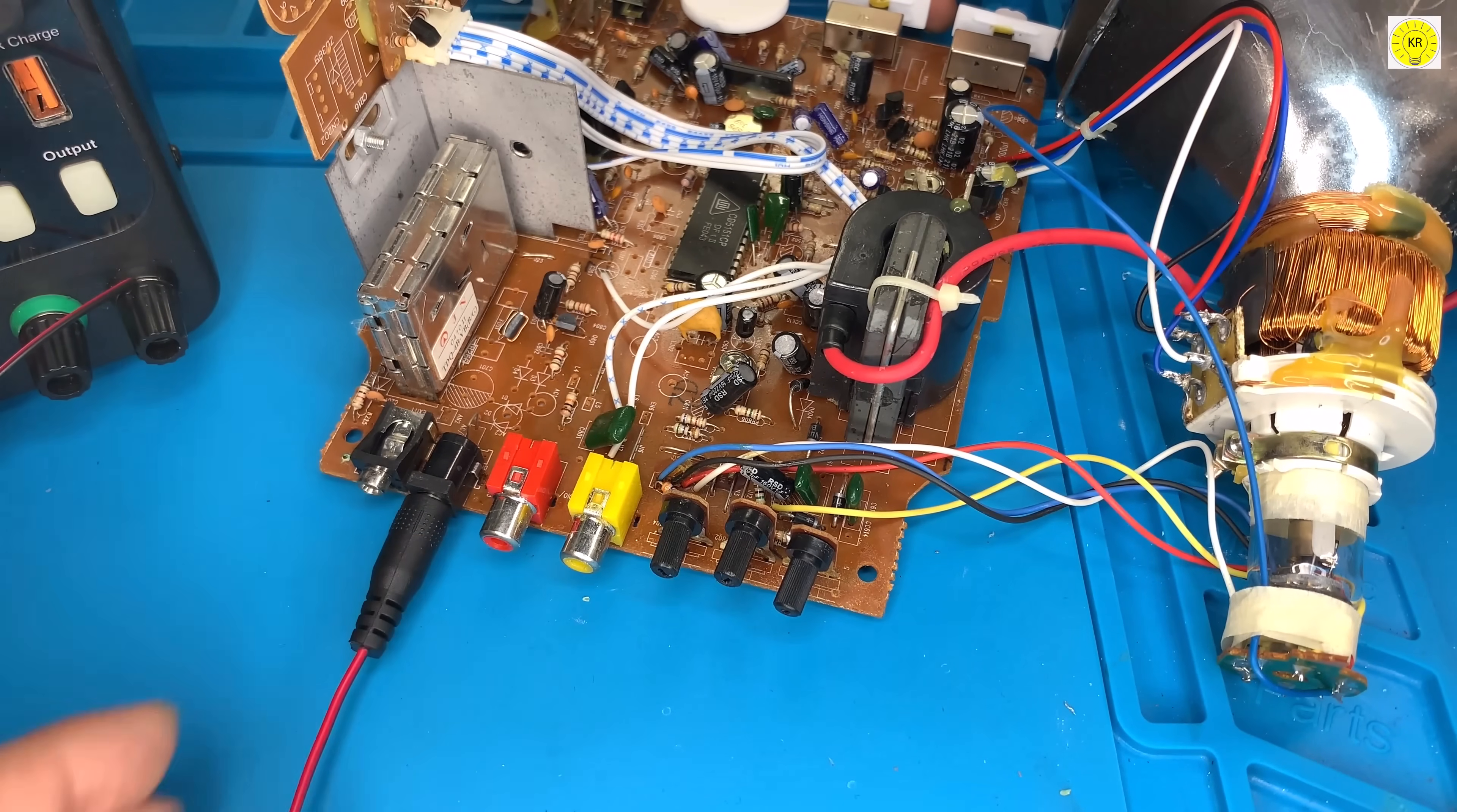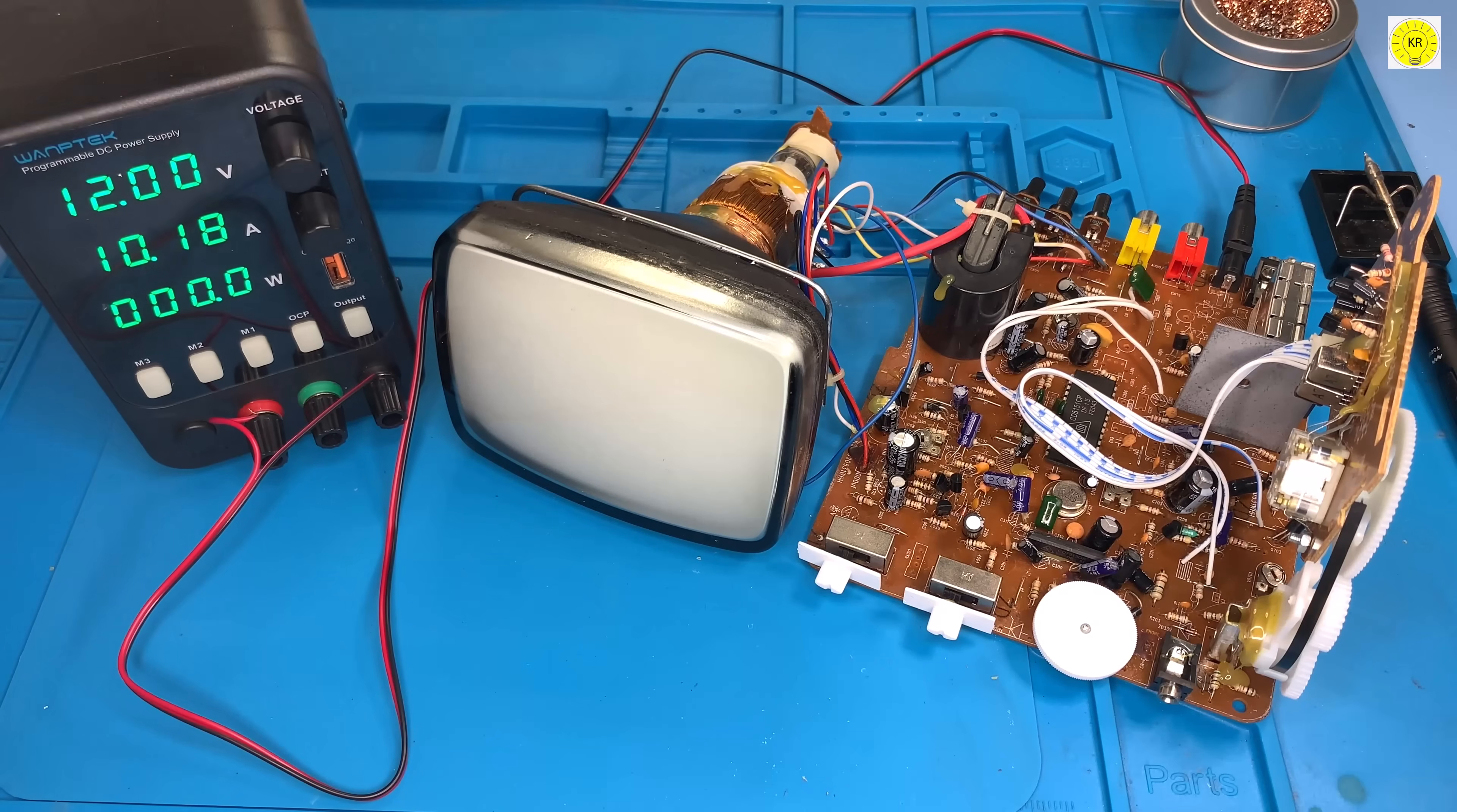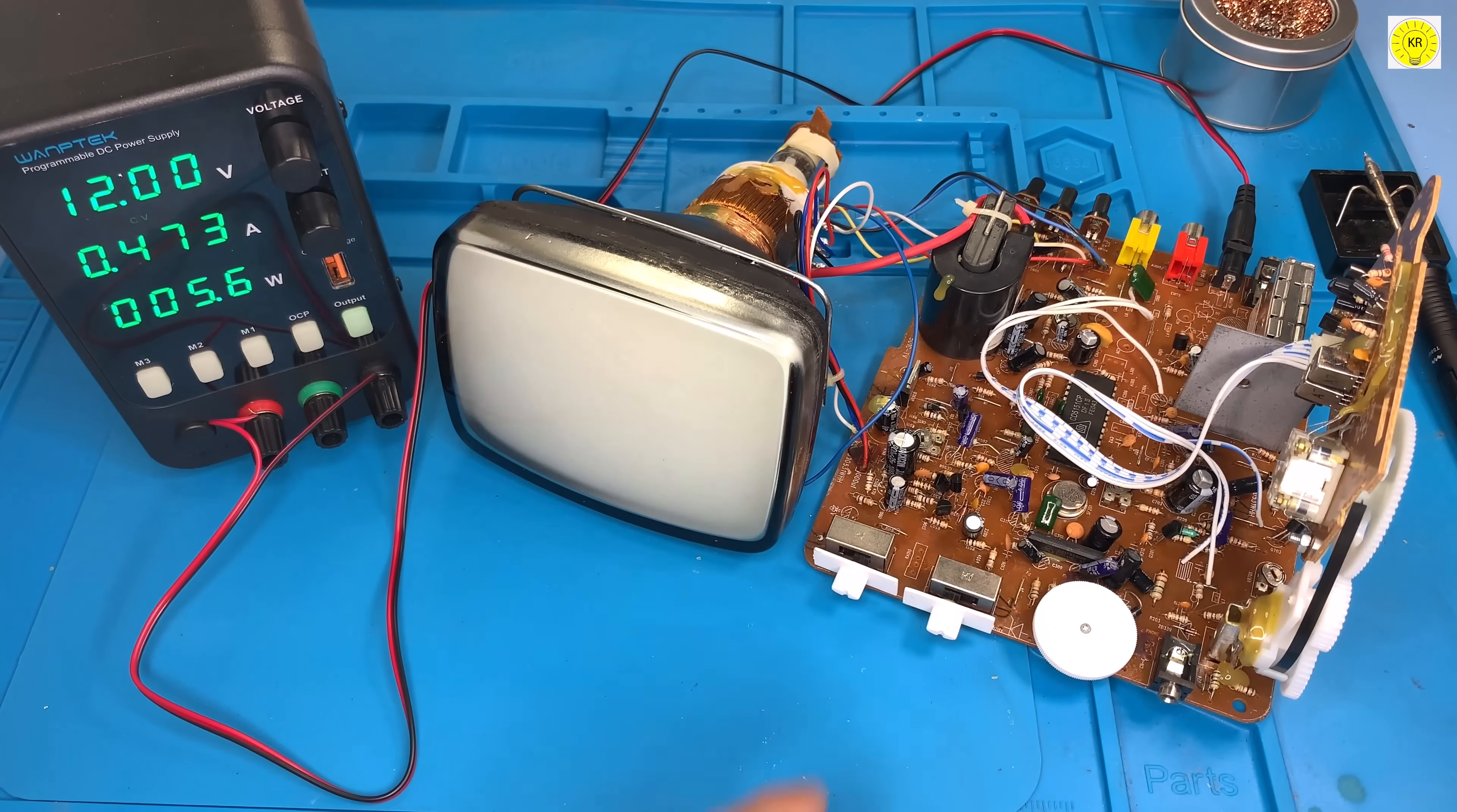Now we connect the TV to a power source and set the voltage to 12 volts. Turn it on. We will see that it starts consuming about 7 watts of current.